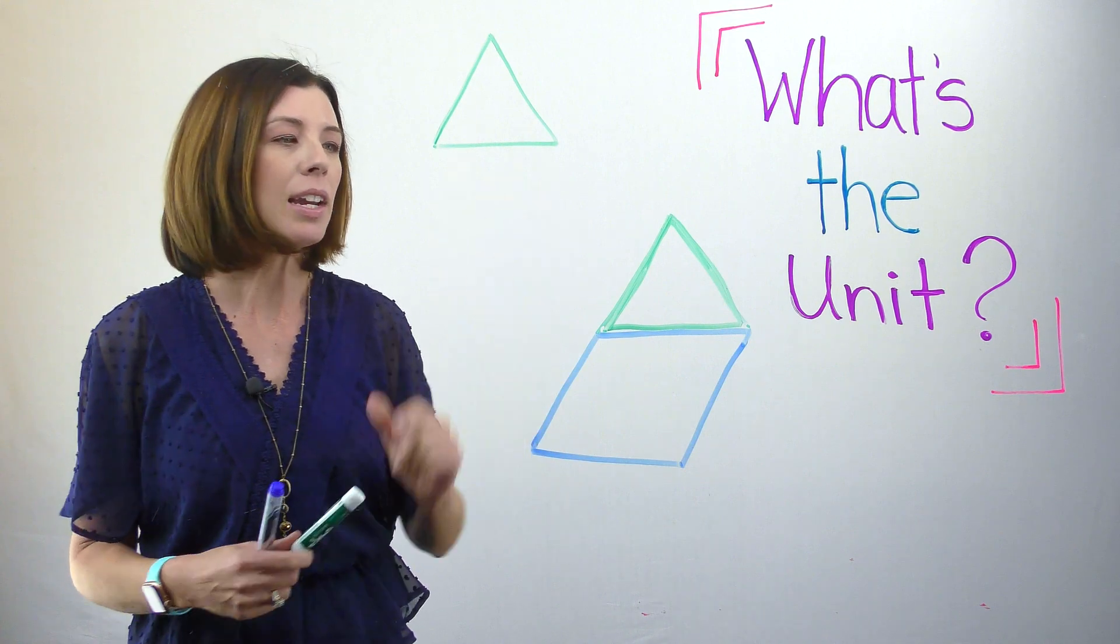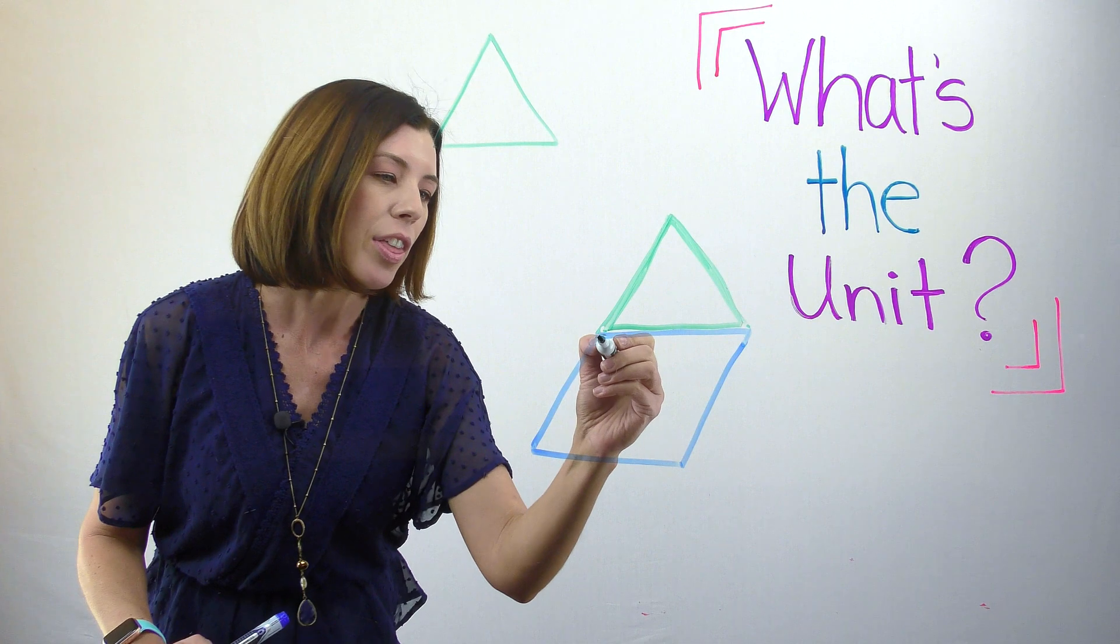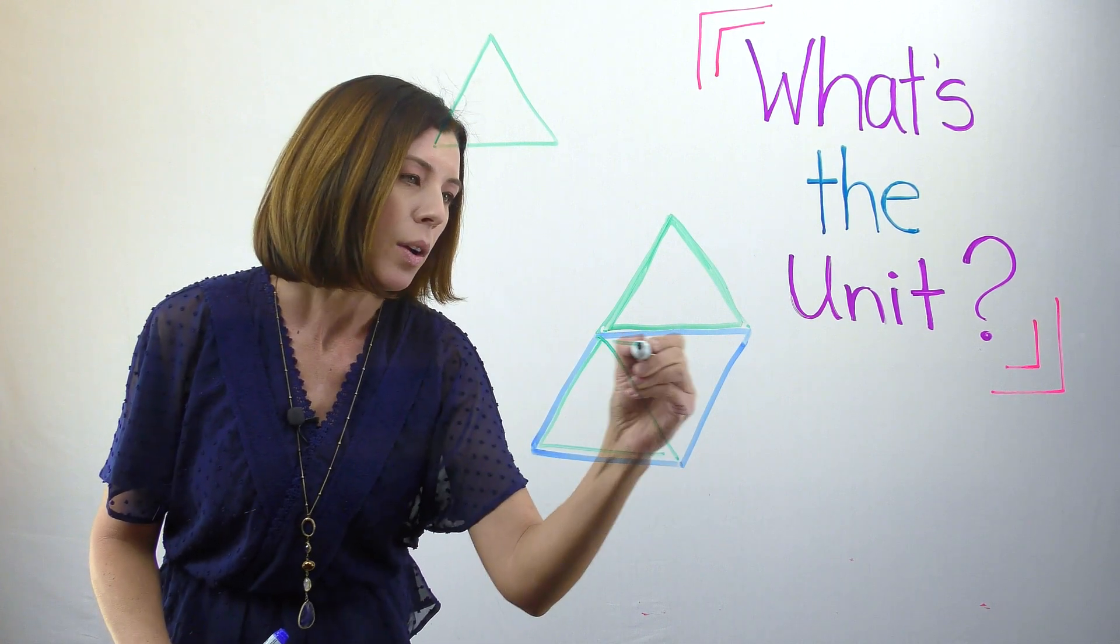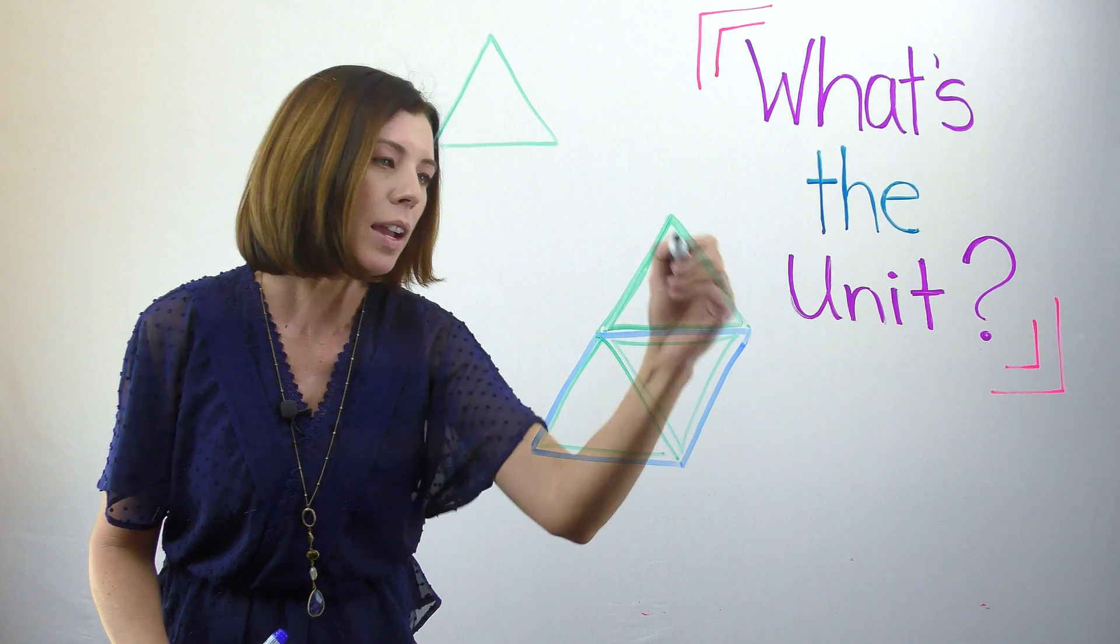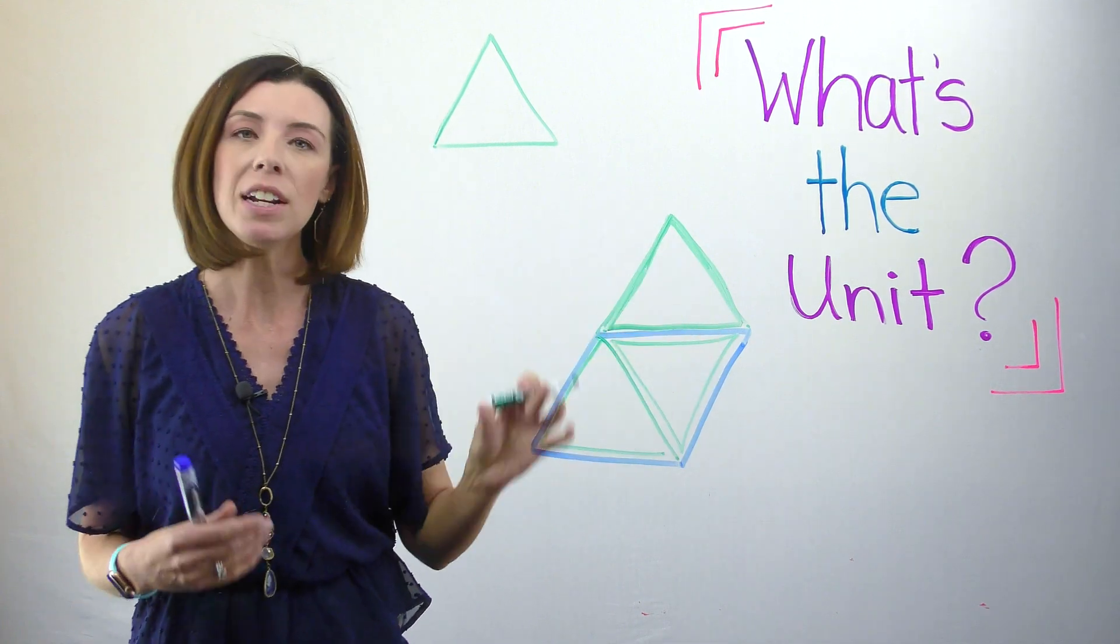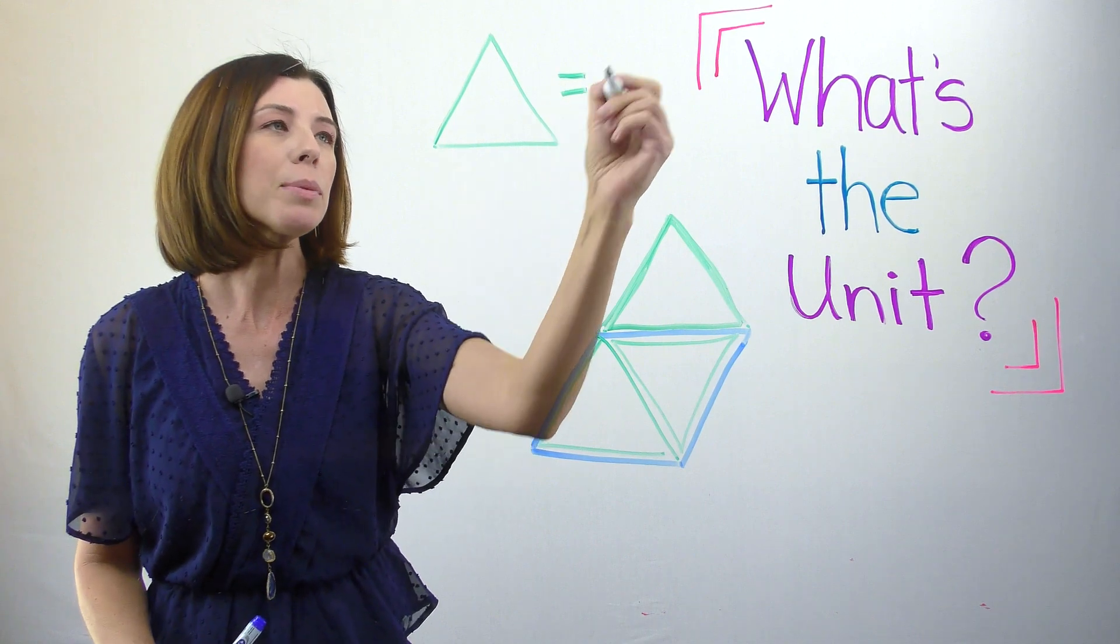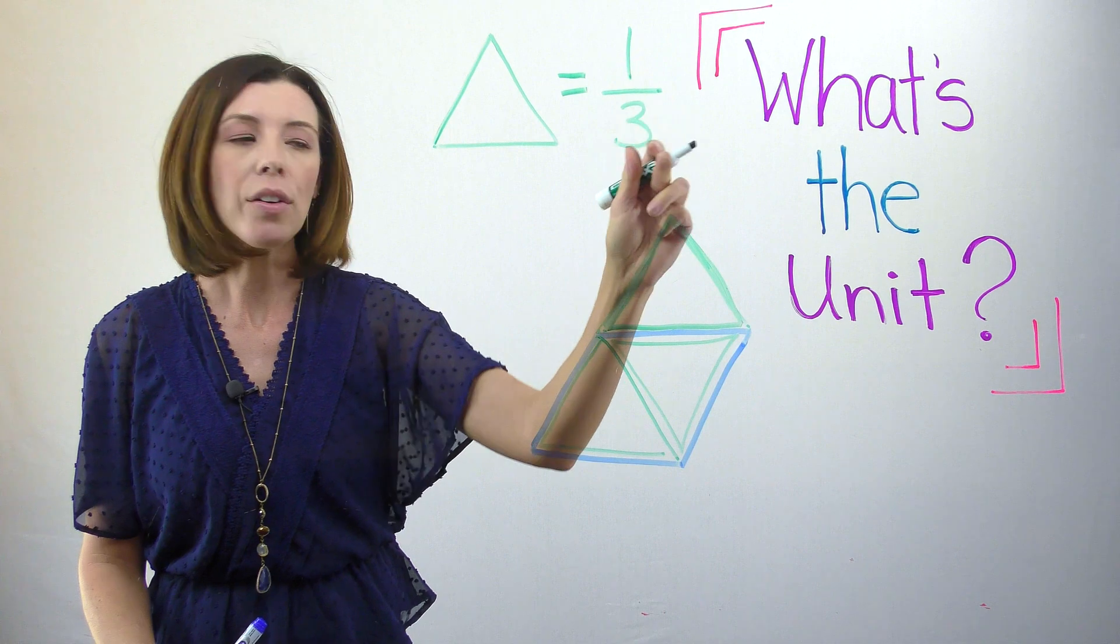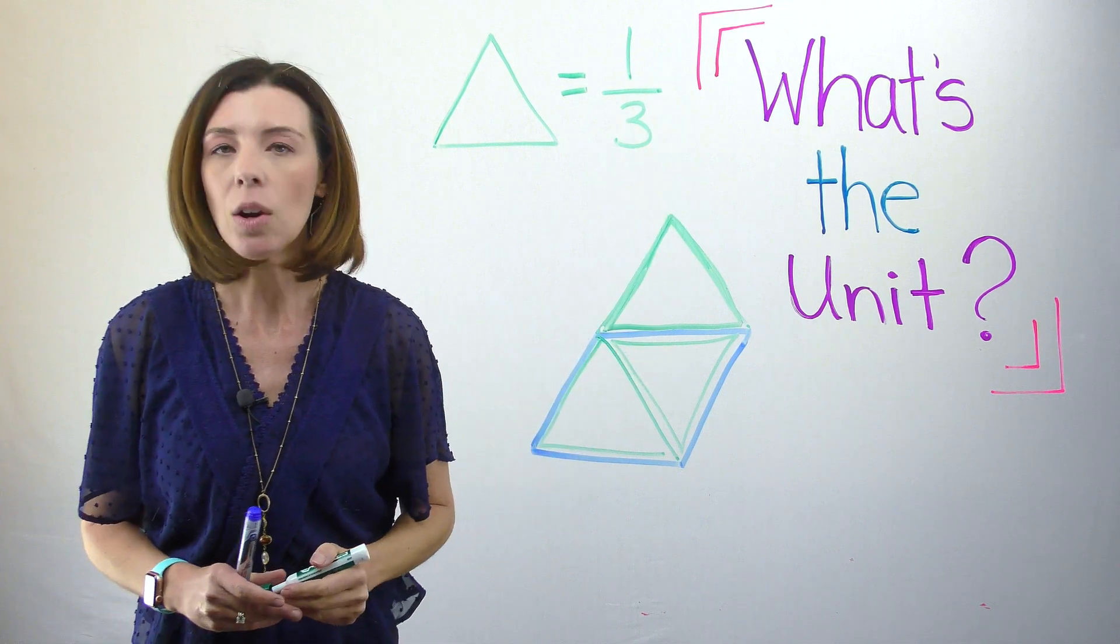Okay, so how many green equilateral triangles fit inside of this? There would be three, right? I can see one here, one here, and one here. Well, if there are three parts that fit into the whole, then that would mean this was equal to one third, one triangle out of three that can make the whole.